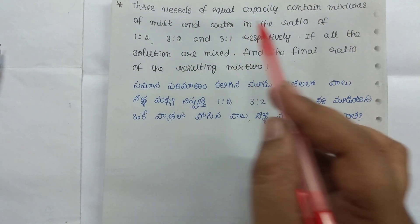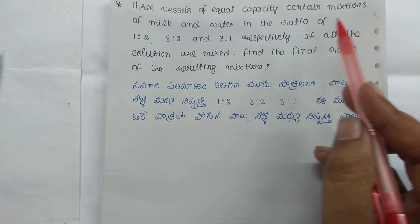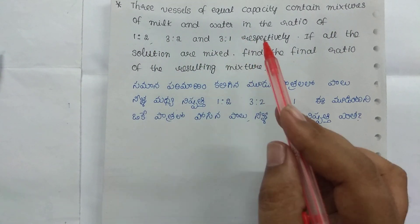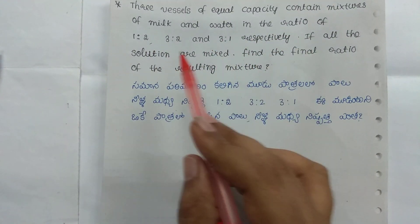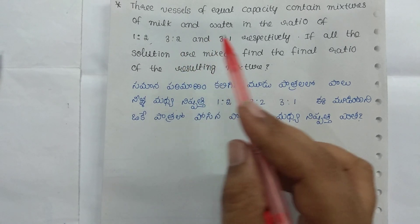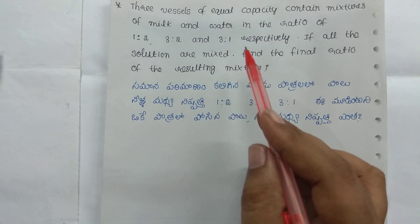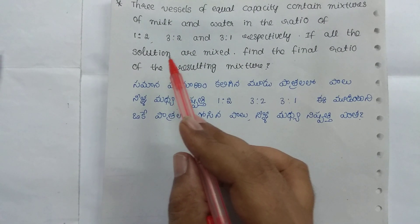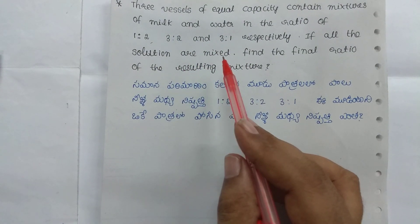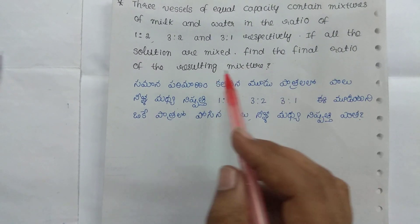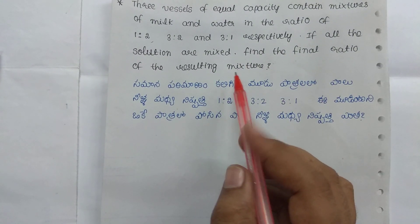3 vessels of equal capacity contain mixtures of milk and water in the ratio of 1 is to 2, 3 is to 2, and 3 is to 1 respectively. If all the solutions are mixed, find the final ratio of the resulting mixture.